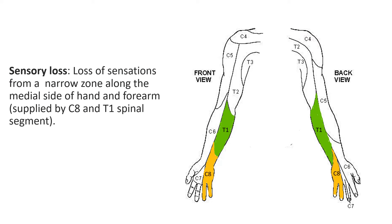For sensory loss, looking at both the anterior and posterior aspects of the upper limb, we can see the cutaneous innervation of C8 and T1 spinal segments. The sensory loss will be along a narrow zone along the medial side of the hand and the forearm.